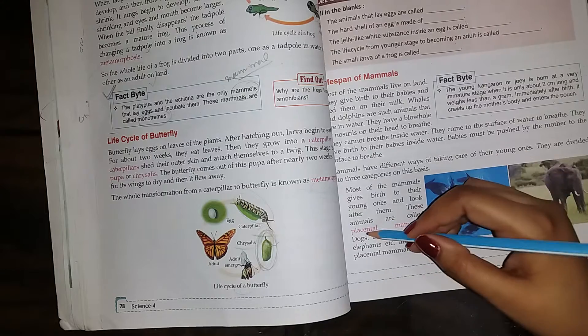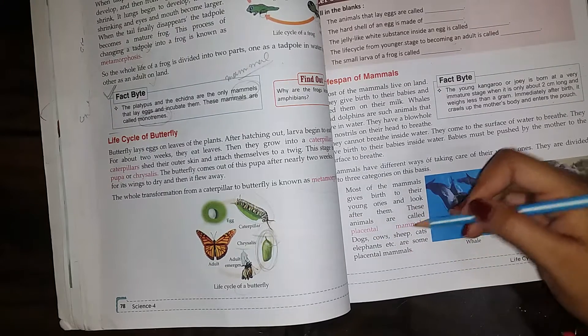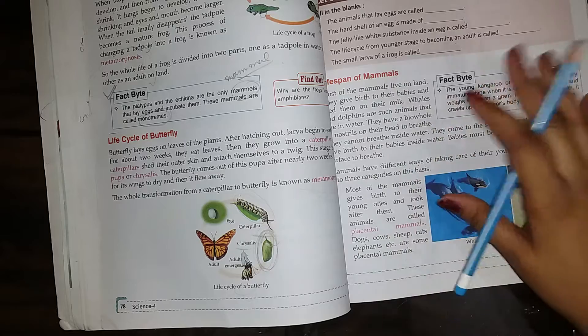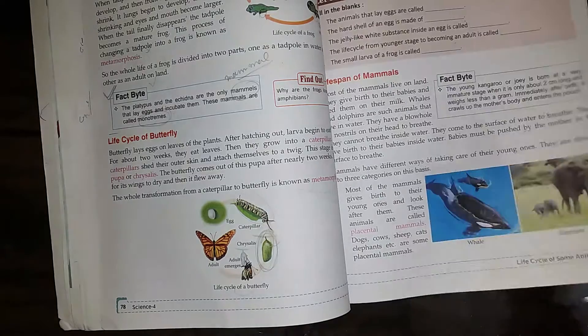Placental mammals: dog, cow, sheep, cat, elephant. They take care of their babies. These are placental mammals.